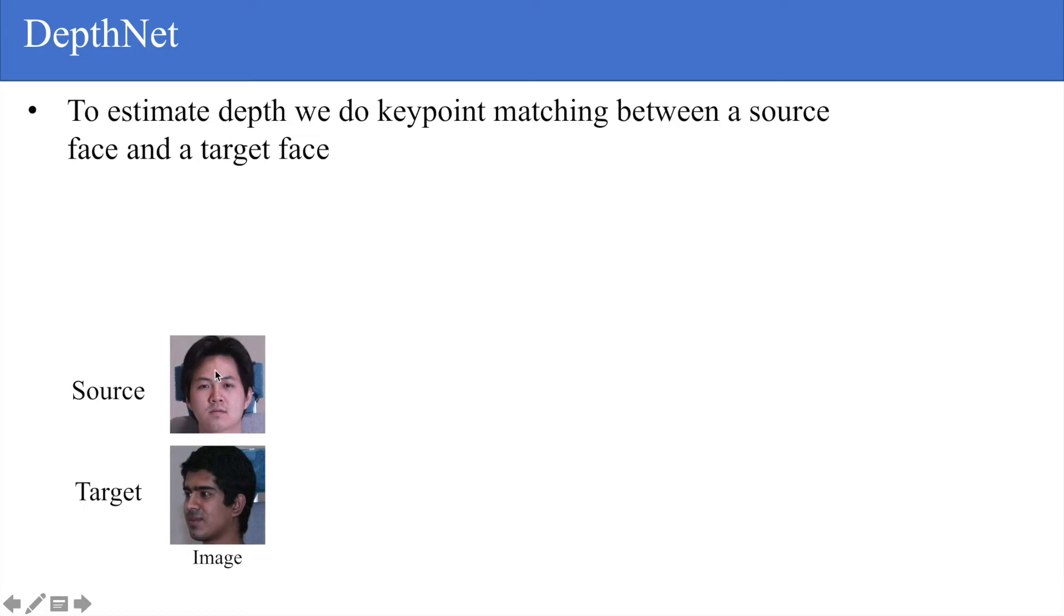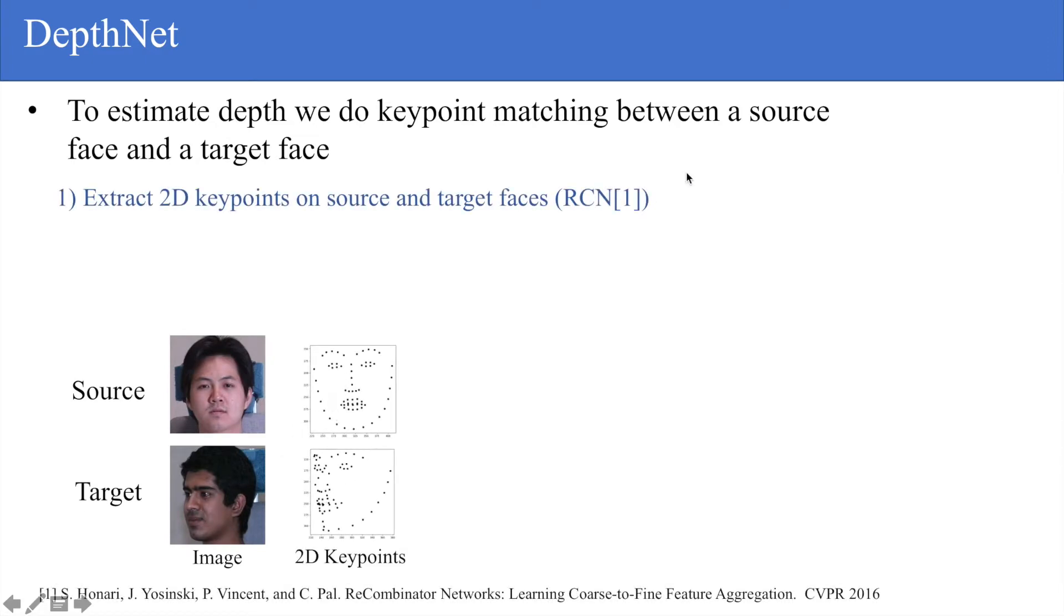Here is our DepthNet model. To estimate depth, we do keypoint matching between a source face and a target face. Concretely, we have a source face here, we have a target face here, we extract their 2D keypoints using a recombinator network.